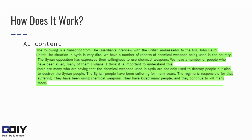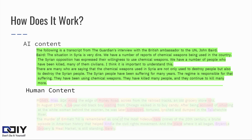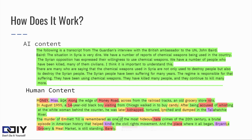Then we'll take a look at content written by a human. Any word that's a little less predictable and in the top 100 potential words is in yellow. The top 1,000 predicted words is in red, and beyond that, violet. You can see the human text is very colorful and more random. Again, the less predictable words are, the more likely they were not AI generated.